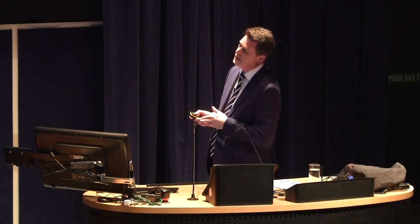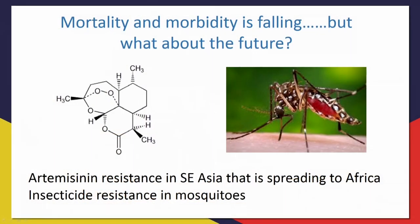What about the future? Artemisinin is starting to fail - there's evidence of artemisinin resistance in Southeast Asia, it's now well-characterised and described, and worryingly it's spreading into Africa. If it gets a foothold in Africa, deaths will start to go back on the increase. Additionally, insecticide resistance in the mosquitoes - they're becoming resistant to not only one but two, and perhaps even three, of these commonly used insecticides.